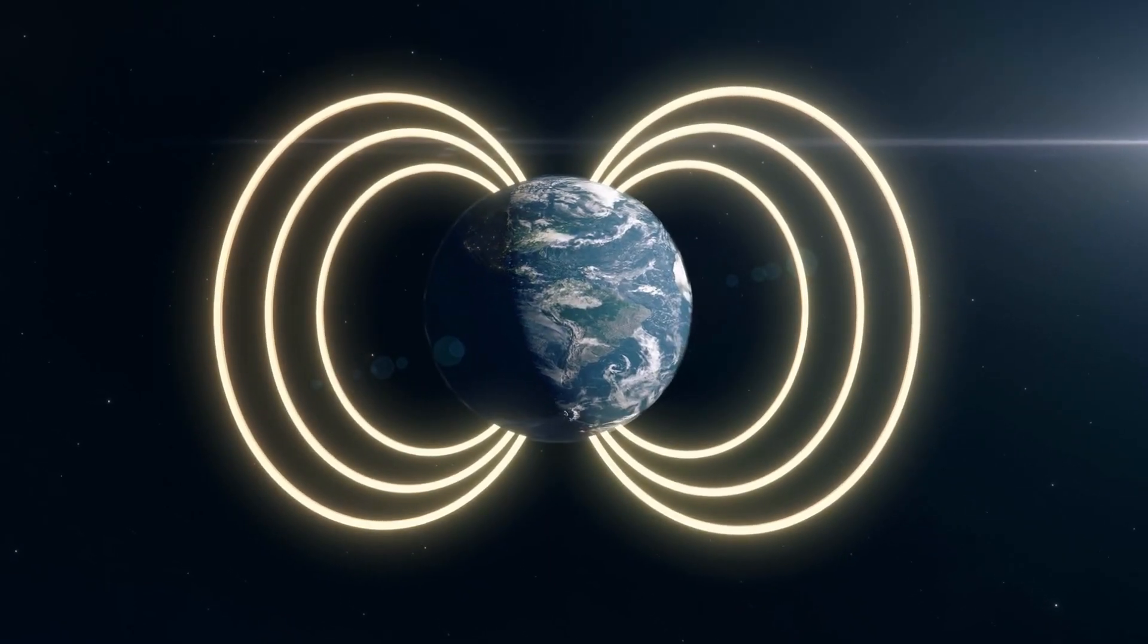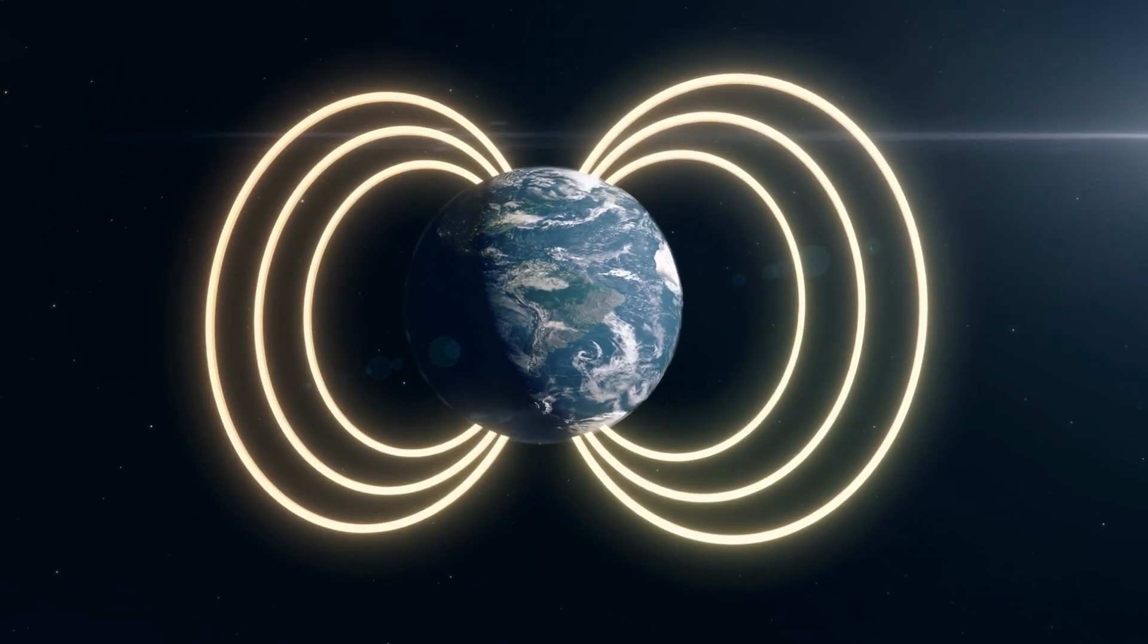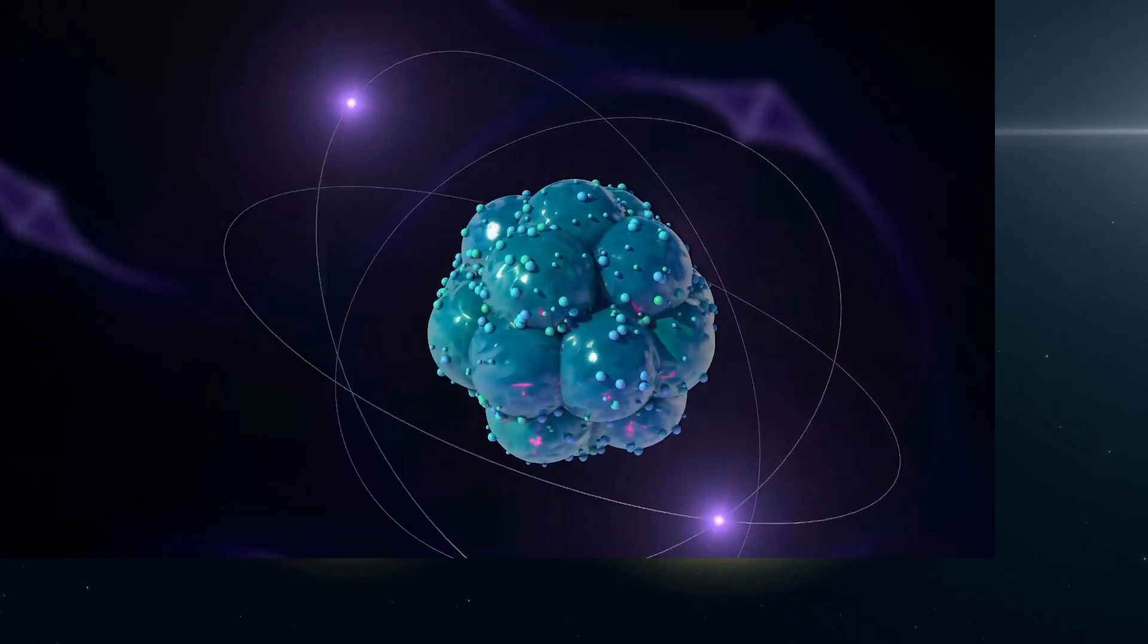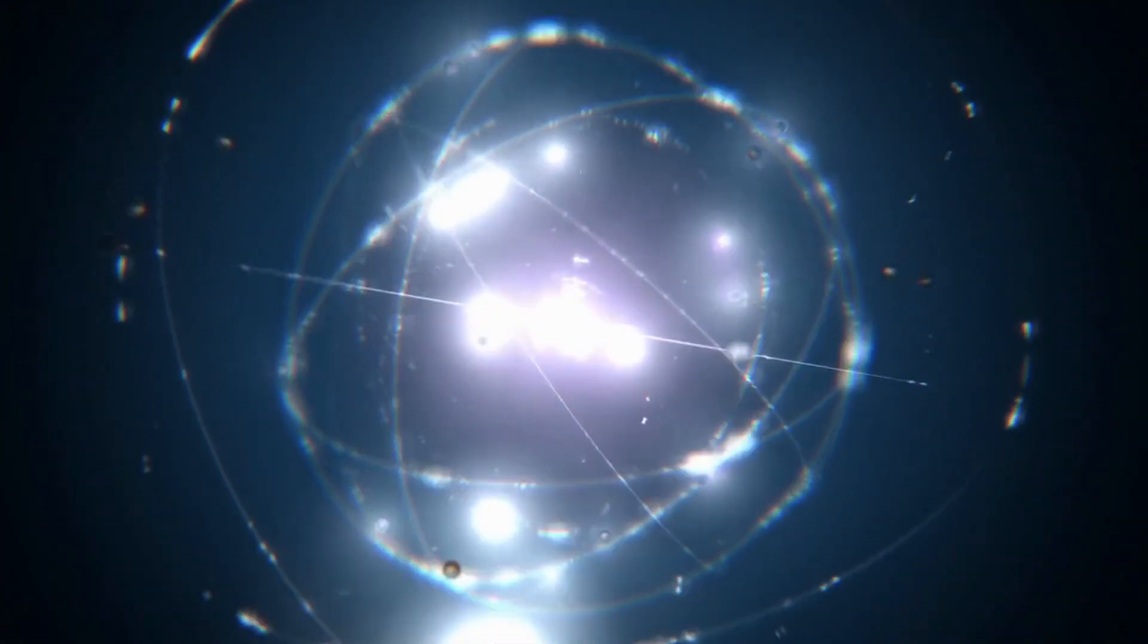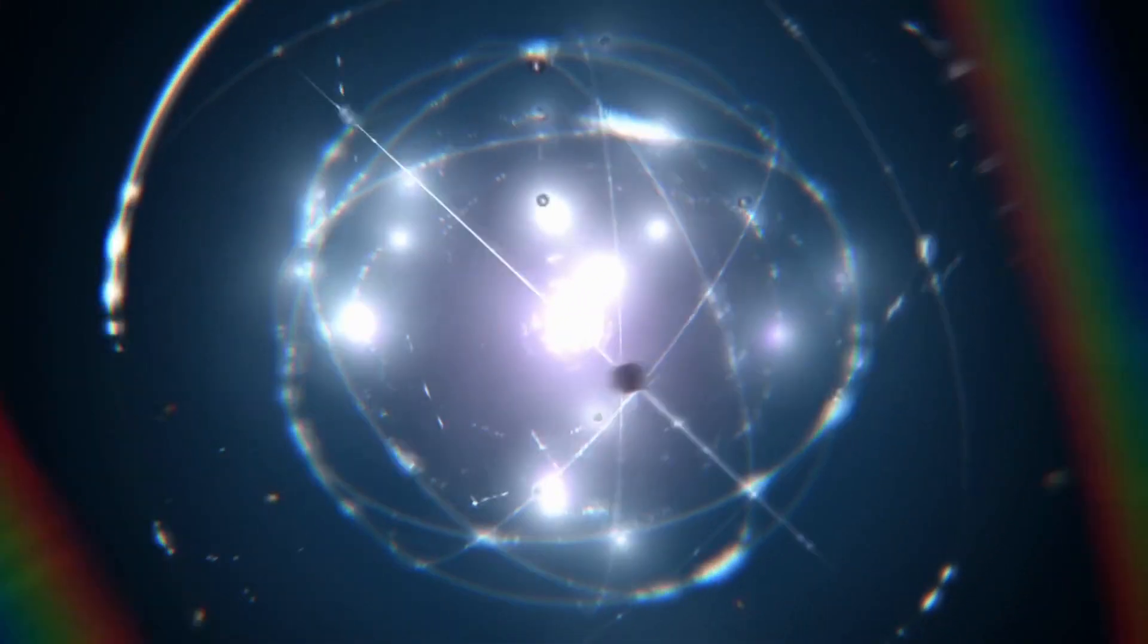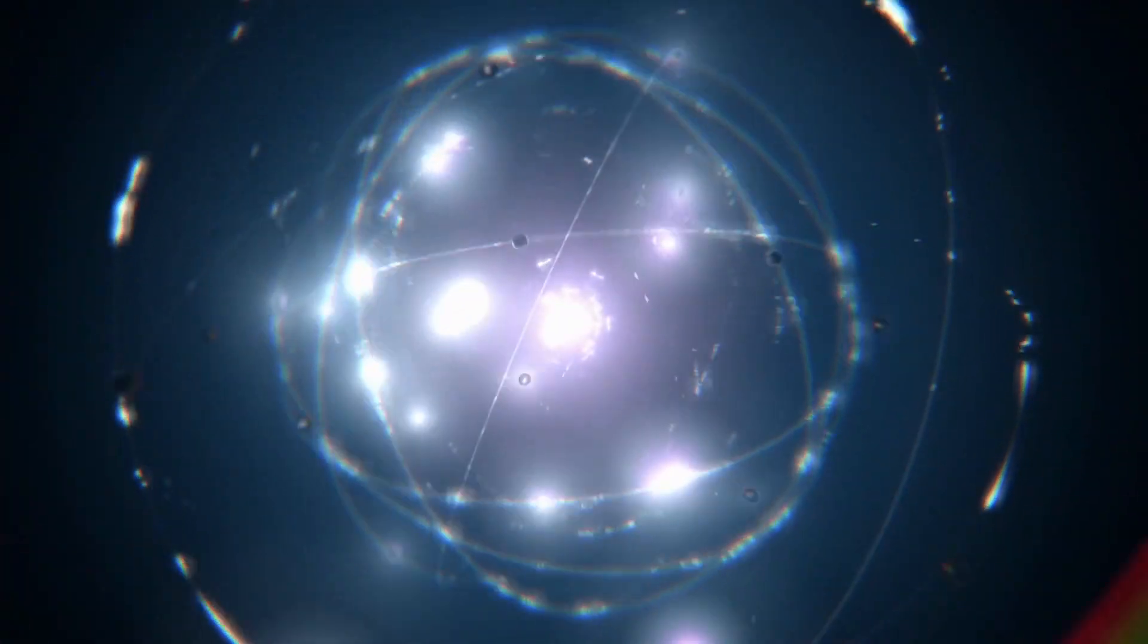What's most perplexing about the object detected is that it resembles a pulsar, yet its rotation is 1,000 times slower. According to researchers, a possible explanation for the mysterious object could be an ultra-long period magnetar, an uncommon type of neutron star characterized by powerful magnetic fields capable of producing powerful energy bursts.